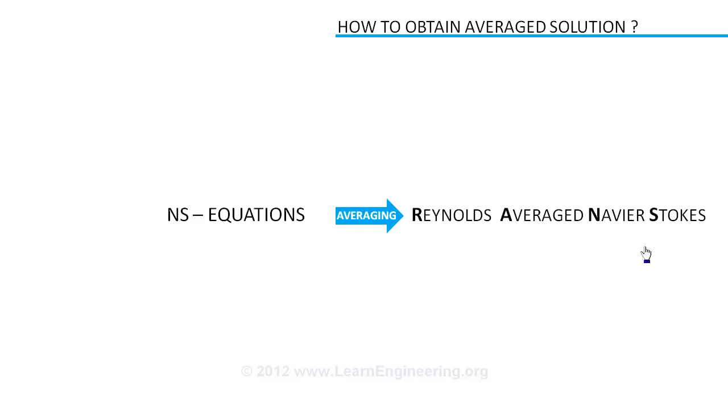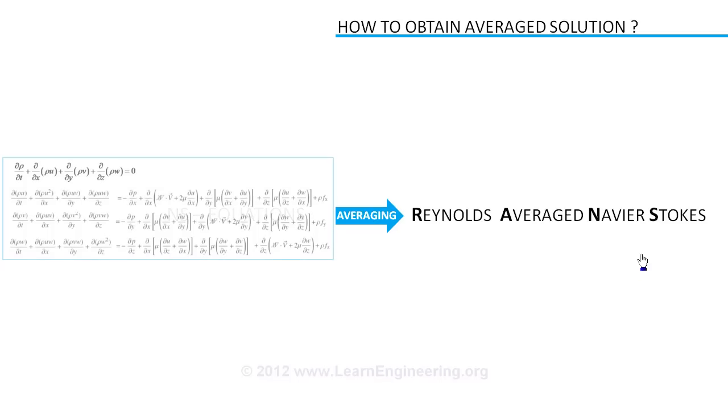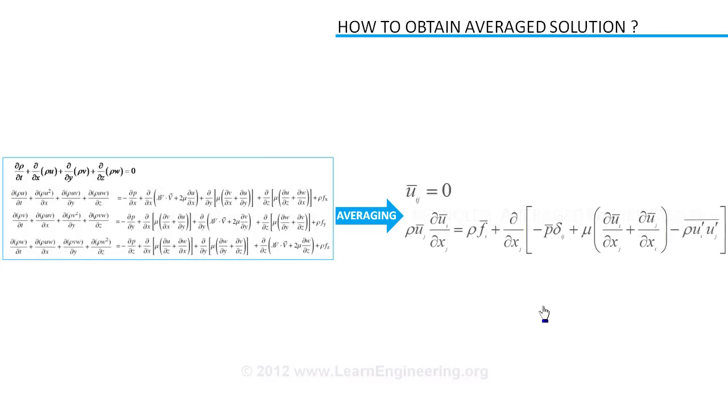The averaged equations are represented here in index notation form. Here F represents external force acting on fluid. But RANS is not purely in terms of mean values; it will have an extra fluctuating component like this, known as Reynolds stress.